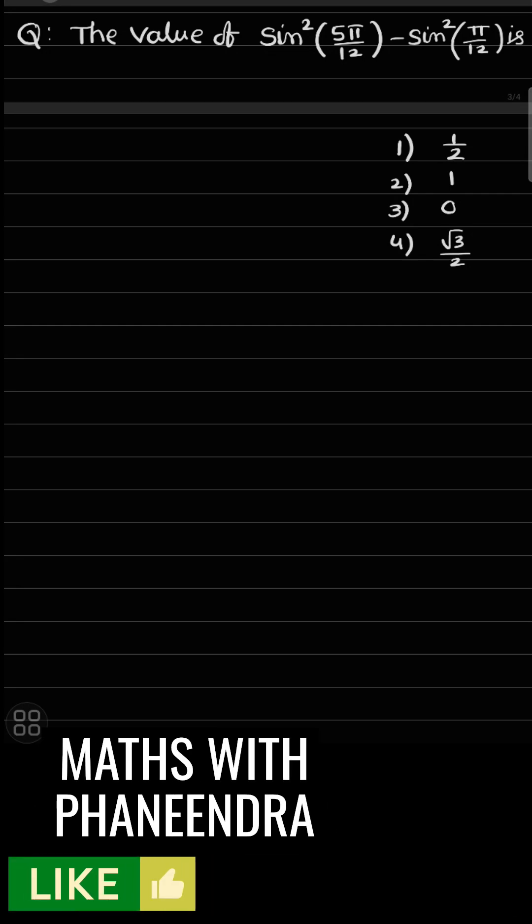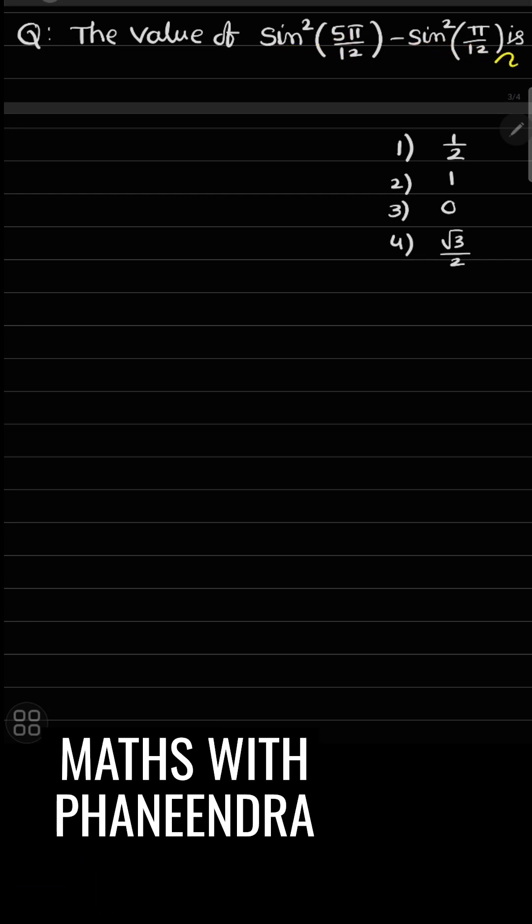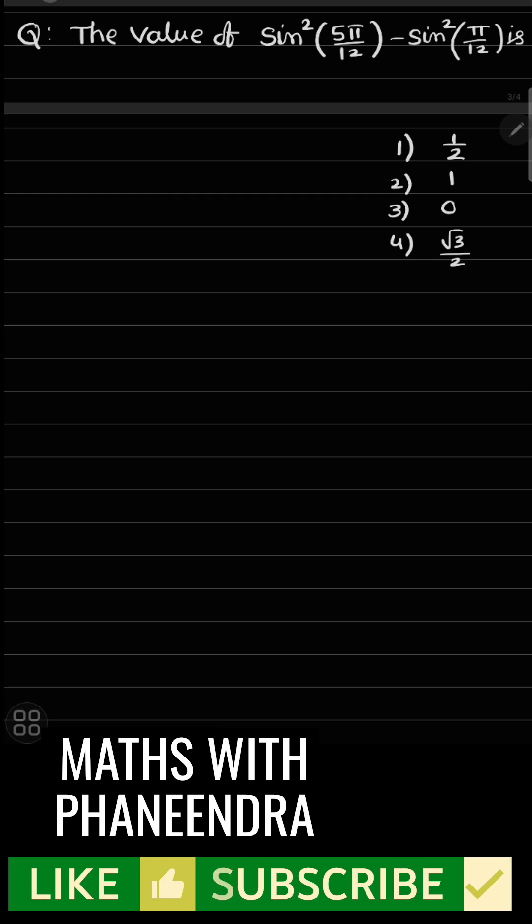So let us have a discussion of the question. The value of sin²(5π/12) - sin²(π/12) is: